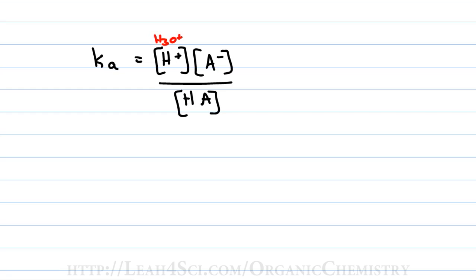A is your molecule; by itself it's negative, and with a proton attached it's neutral because the proton is positive. We're not doing calculations, so we don't care about the acid and conjugate base right now. Instead, we want to look at the relationship of that Ka. Because Ka equals H+ times other numbers, the Ka value is directly proportional to the H+ concentration. The H+ concentration is the acid concentration — the more H+ you have, the stronger your acid.